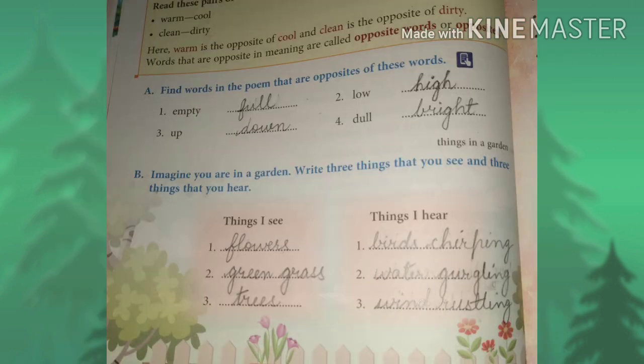Now we turn to the next page, Exercise A. Find words in the poem that are opposites to these words. Number 1: Empty — the opposite of empty is full. Number 2: Low — the opposite of low is high, H-I-G-H.